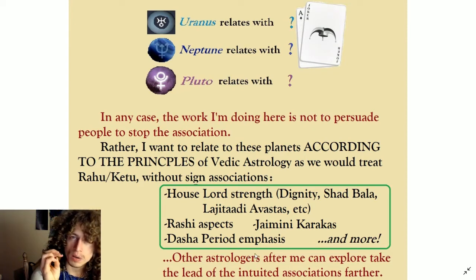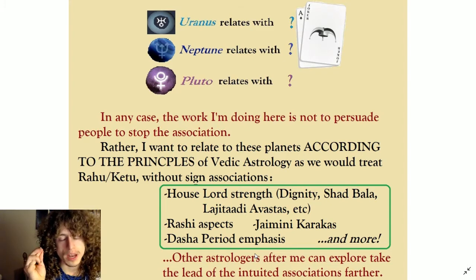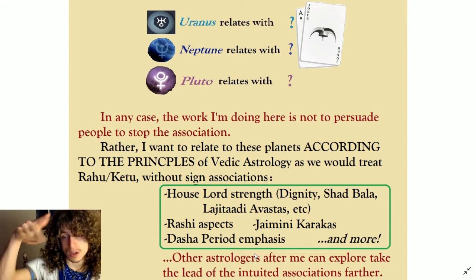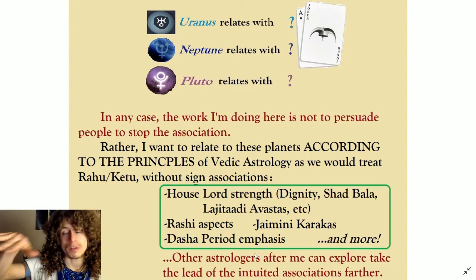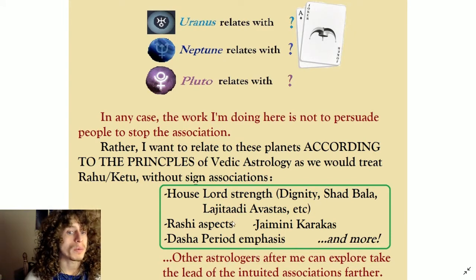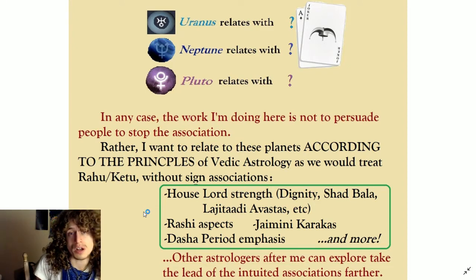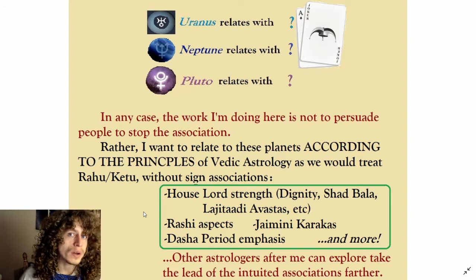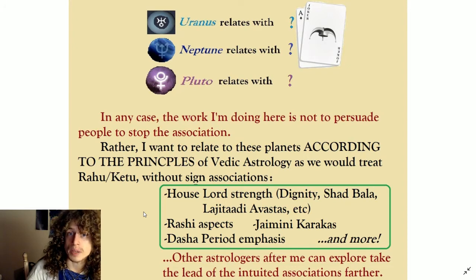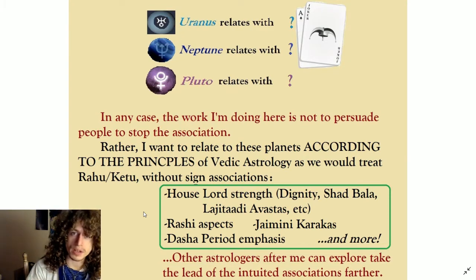Jaimini and Dasha periods in particular are huge descriptors of how intense an outer planet experience is going to be. If an outer planet is touching your Atmakaraka, it's going to ring deeply in your soul's experience — not only in this incarnation, but the actions that you do in a period like that will affect your life for incarnations to come. Same thing with the Dasha period emphasis. If you're in a Saturn Dasha, it's a hard time for me because I have Neptune and Uranus in Capricorn together. I was almost suicidal in 2017 because of a Saturn period, because Saturn is the ground for these two outer planets.